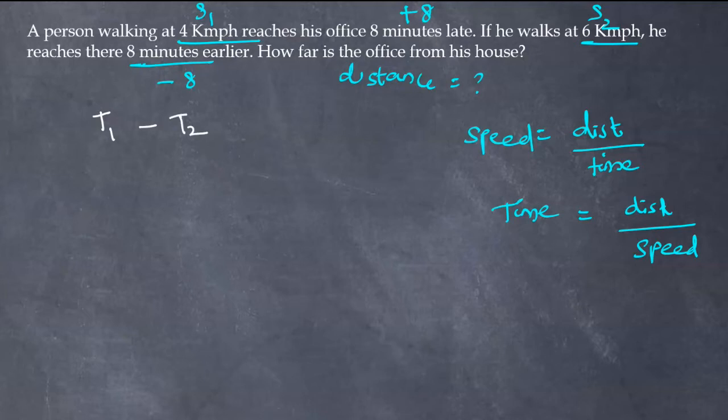T1 minus T2. For T1 it is distance by S1, which is D by 4, minus it is D by S2, which is D by 6, which equals T1 is 8 minus minus 8.